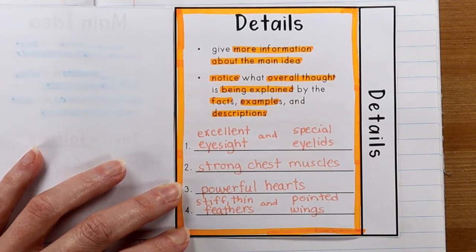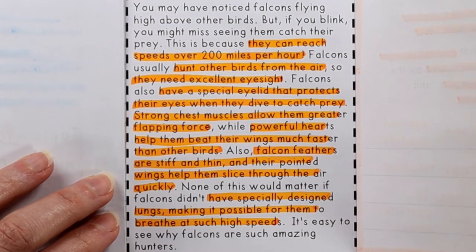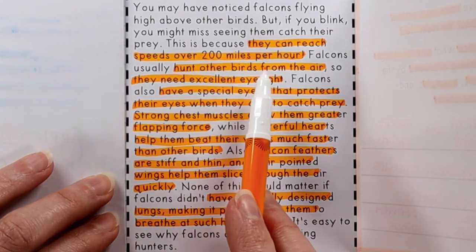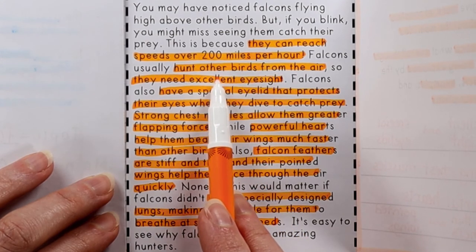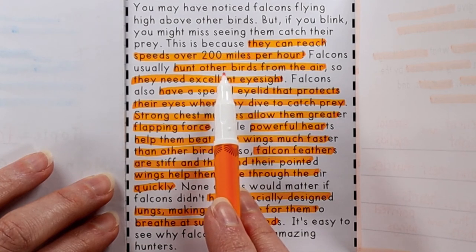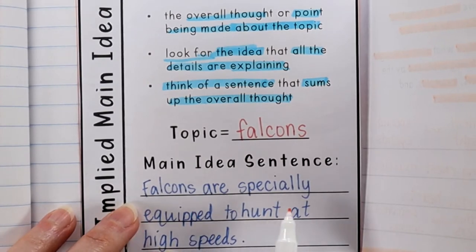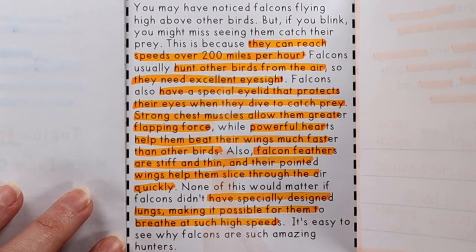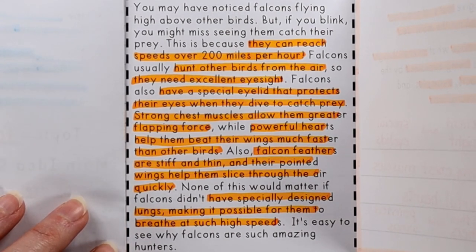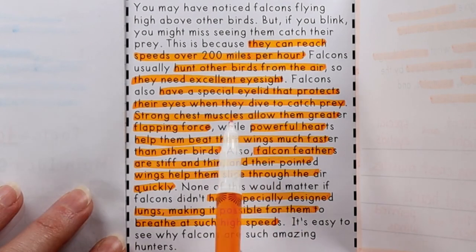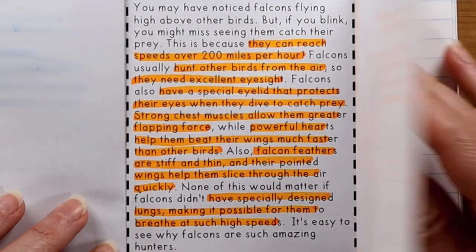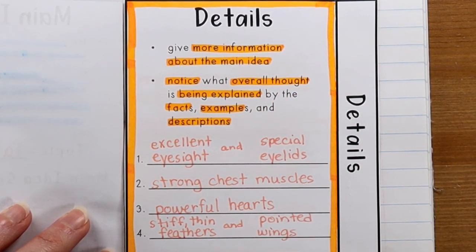There were other details in the passage as well — it also mentioned specially designed lungs which make it possible to breathe at such high speeds, though we're not putting that one down since it only asked for four. The details about reaching speeds over 200 miles per hour and hunting other birds from the air are really just setting up the main idea rather than explaining how they do it. The specific physical features — eyesight, eyelids, muscles, hearts, feathers, wings, and lungs — are the ones that actually support the idea that falcons are specially equipped to hunt at high speeds.